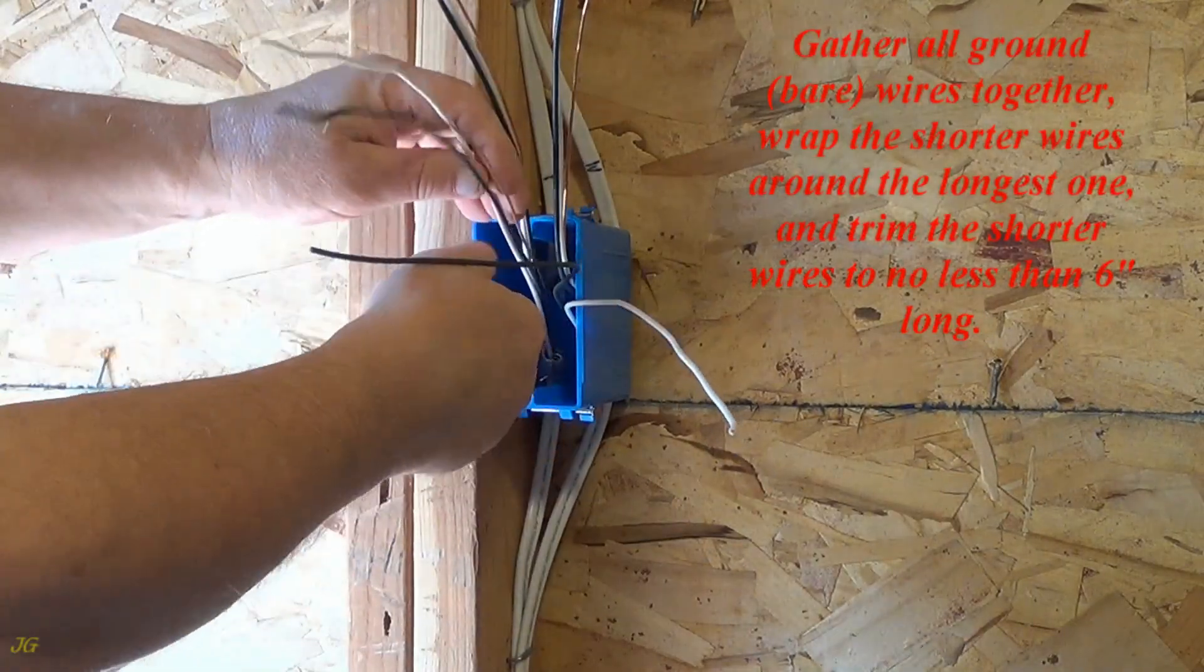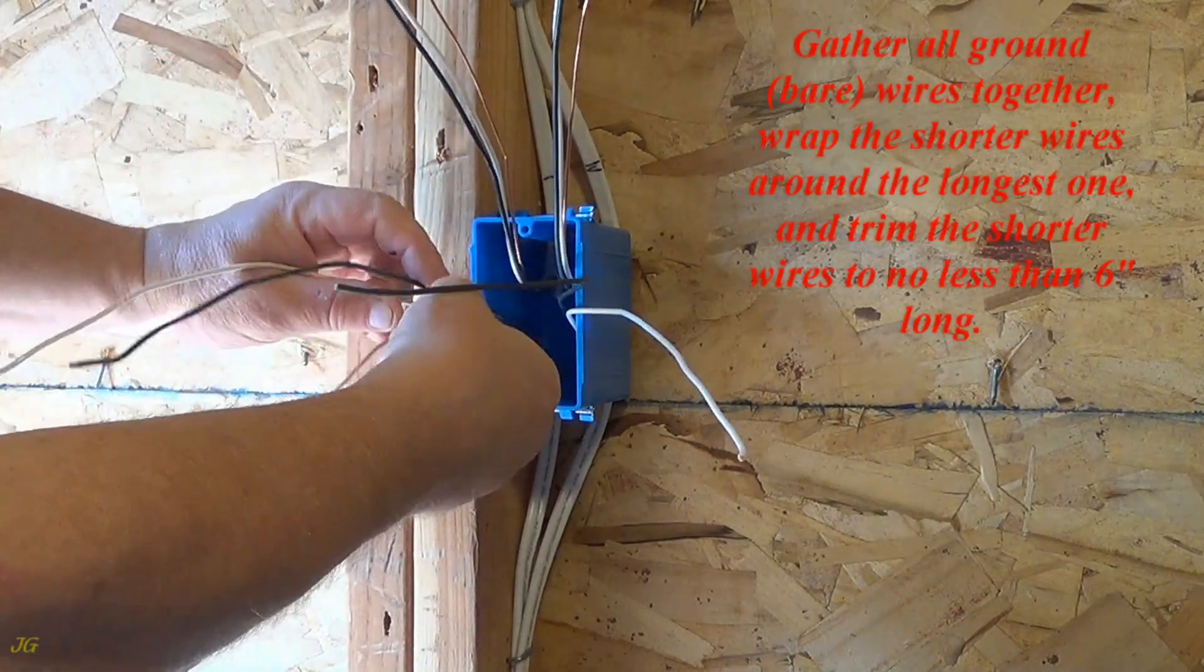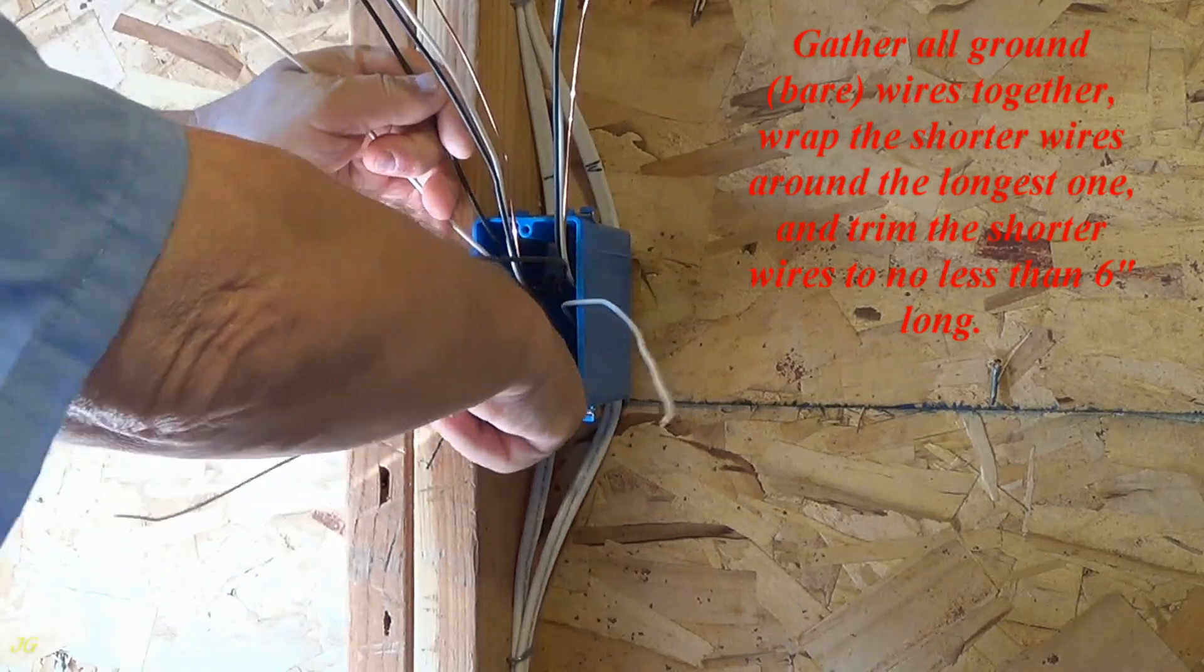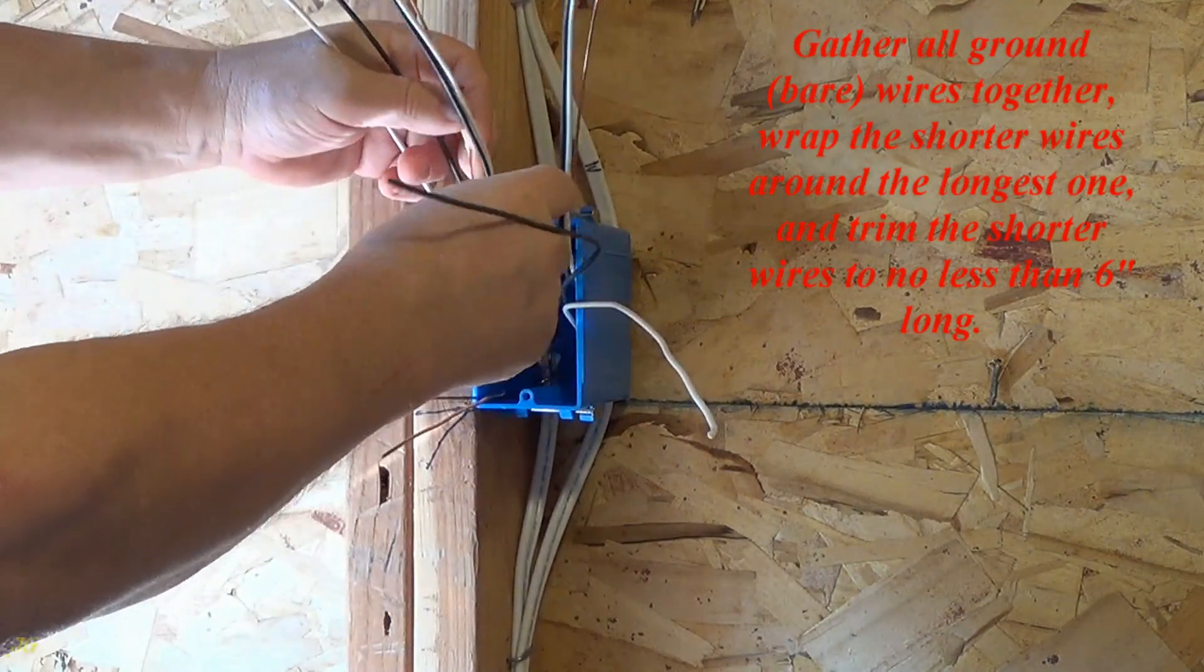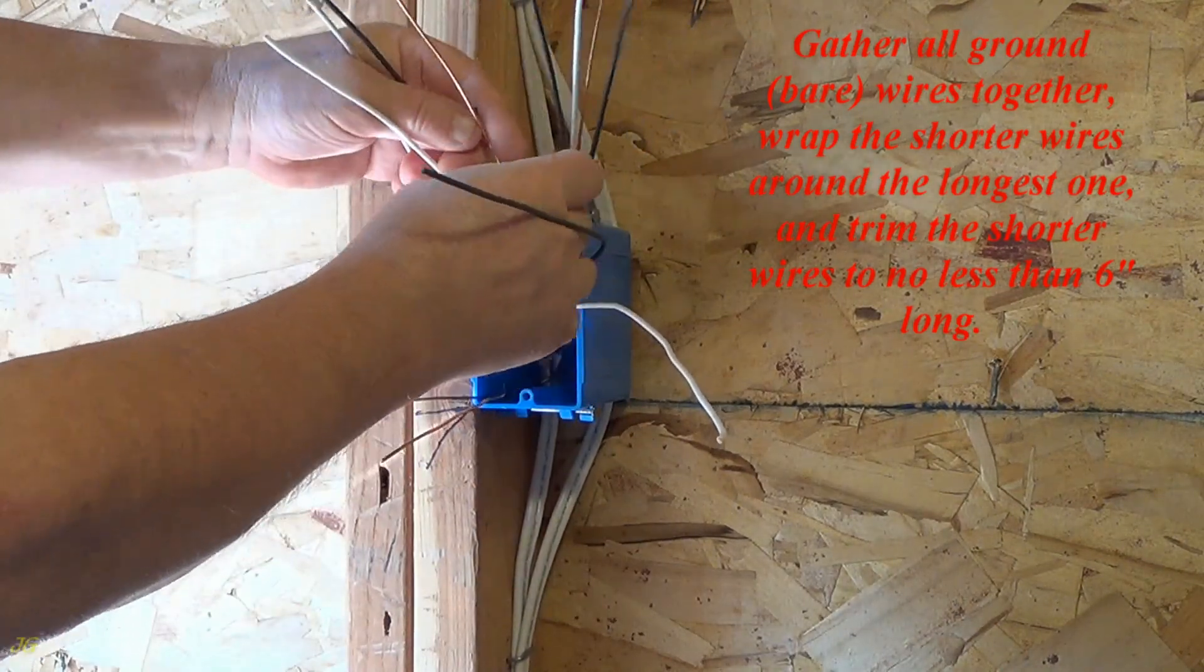Gather all ground, bare, wires together. Wrap the shorter wires around the longest one, and trim the shorter wires to no less than 6 inches long.